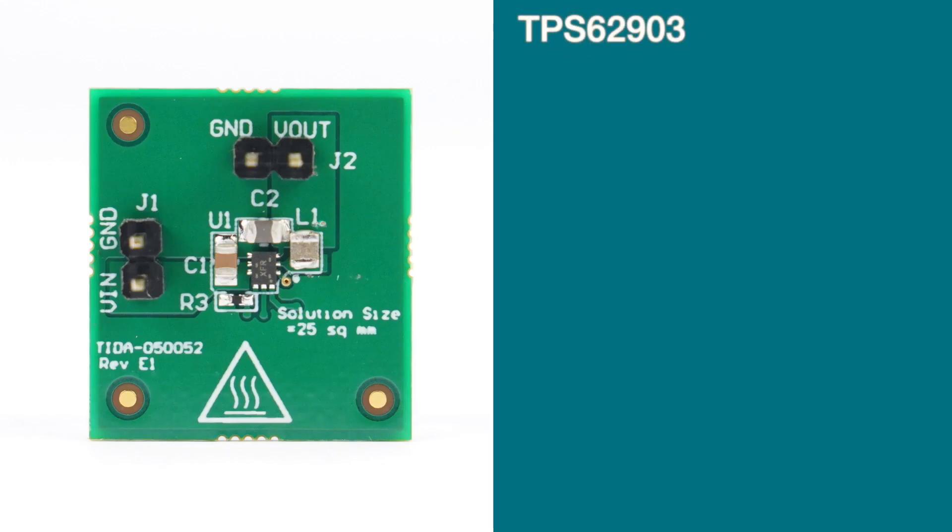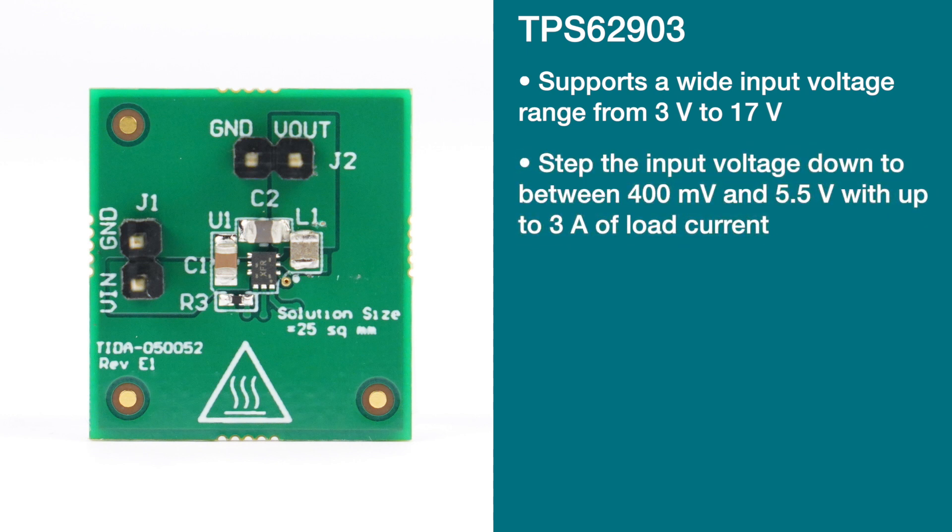Today I want to talk about the newly released TPS62903. This device can support a wide input voltage range from 3 to 17 volts and step that input down to anything between 400 millivolts and 5.5 volts, with up to 3 amps of load.